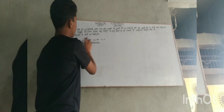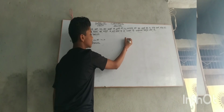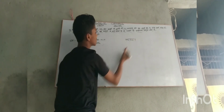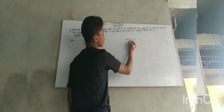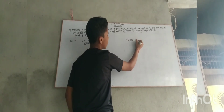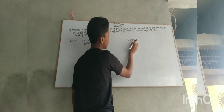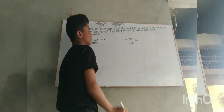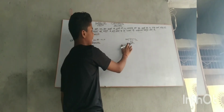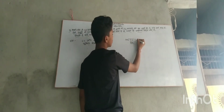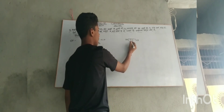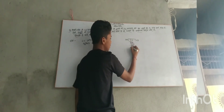First of all, we divide 326 and 366. What happens when we divide 326 and 366? So we get 9, and 9 multiplied gives us 288. So our remainder comes out to be 8.